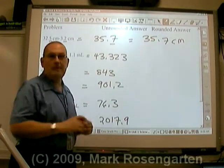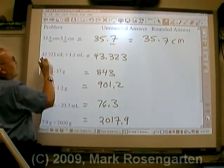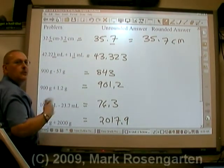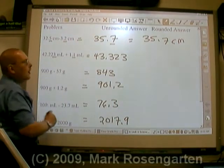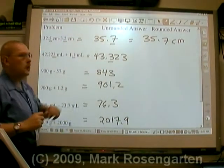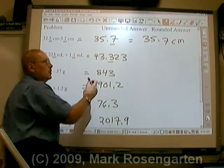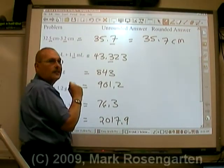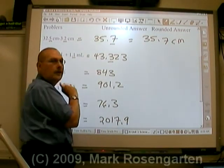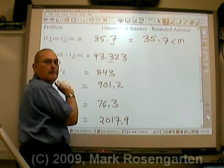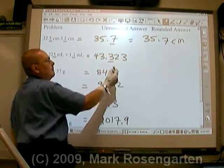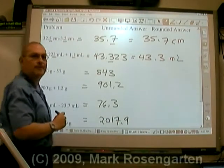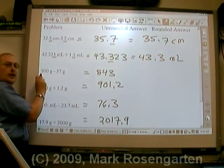For the next one, this number goes out to the thousandths place, but this number only goes out to the tenths place. Which one is least precise? The one that goes the least far out — the tenths place. So we're going to round 43.323 to the nearest tenth. We look at the place just after the one we're rounding to: if it's four or less, we leave that place alone; if it's five or more, we bump it up. There's a two here, so it doesn't get bumped up — the answer is 43.3 milliliters.